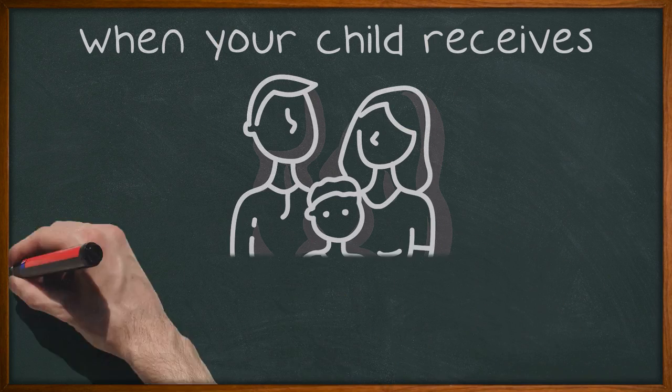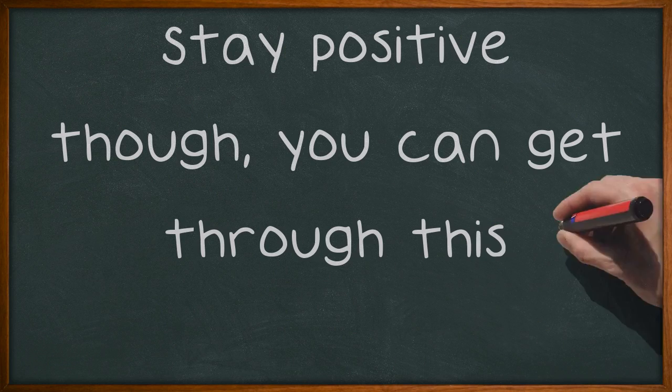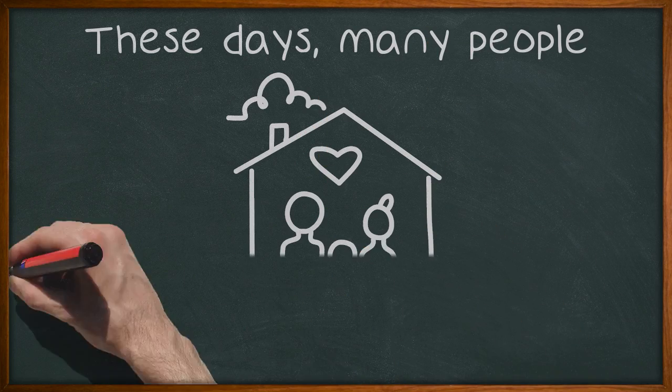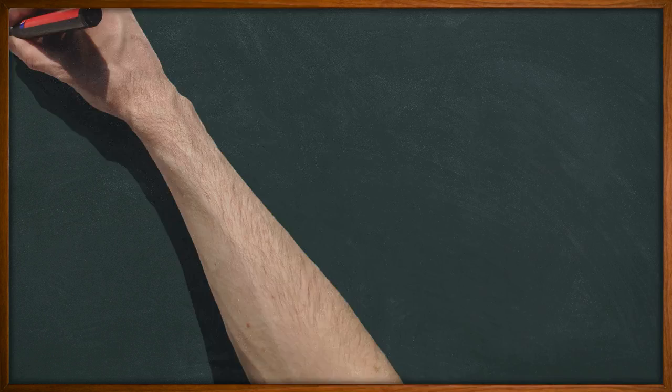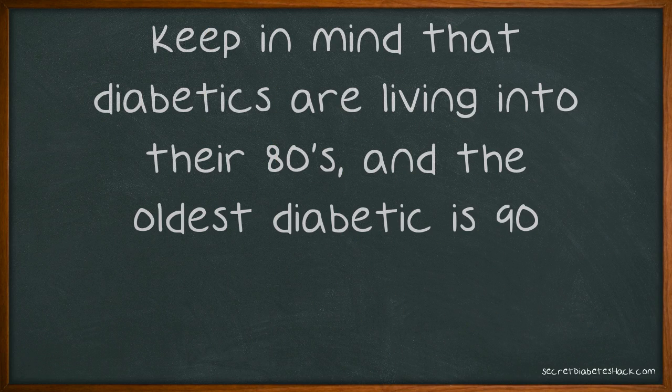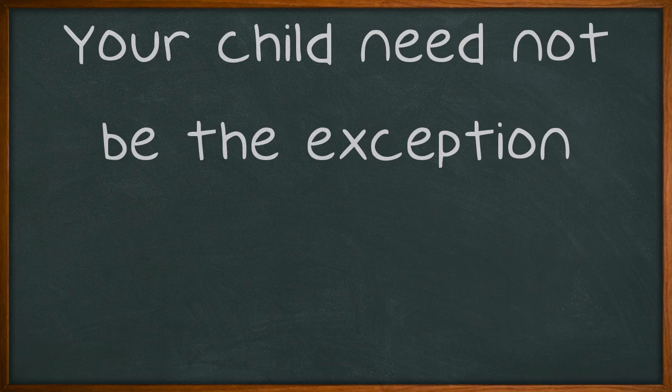When your child receives a diabetes diagnosis, life can feel devastating. Stay positive though, you can get through this. These days, many people have diabetes, and treatments have improved so much that children with diabetes can live quite normally. Keep in mind that diabetics are living into their 80s, and the oldest diabetic is 90. Your child need not be the exception.